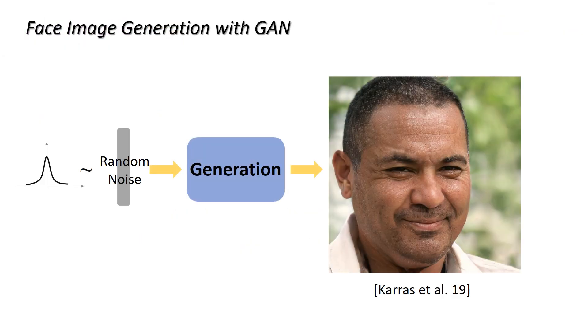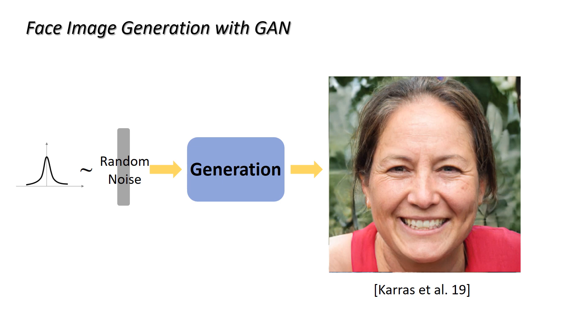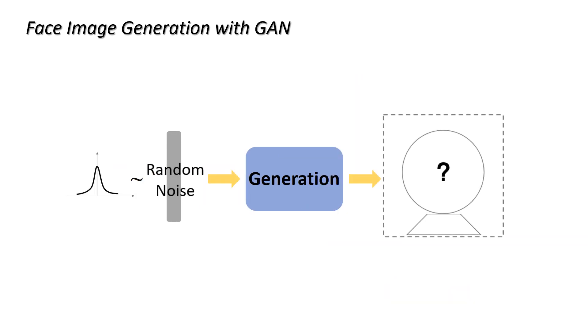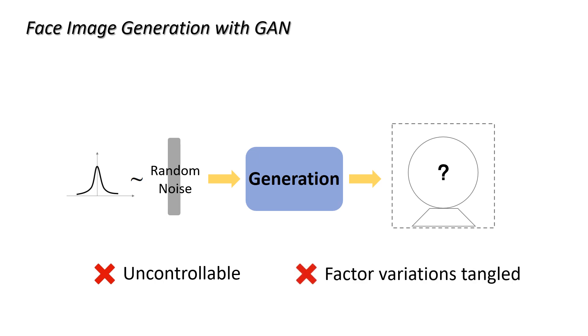Nowadays, state-of-the-art GAN models such as StyleGAN can generate high-quality face images that are even hard to distinguish from real ones. However, the process of mapping a random noise to an image in GAN is unpredictable. Given a random noise, we don't know what kind of face will be generated, and multiple face attributes will be changed simultaneously if we switch from one noise input to another.